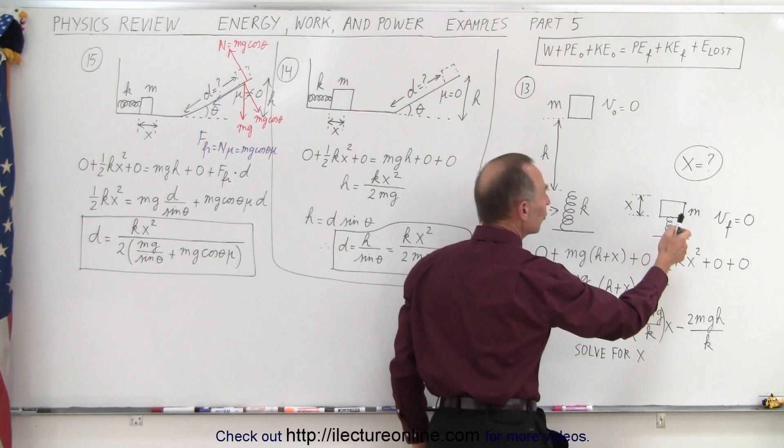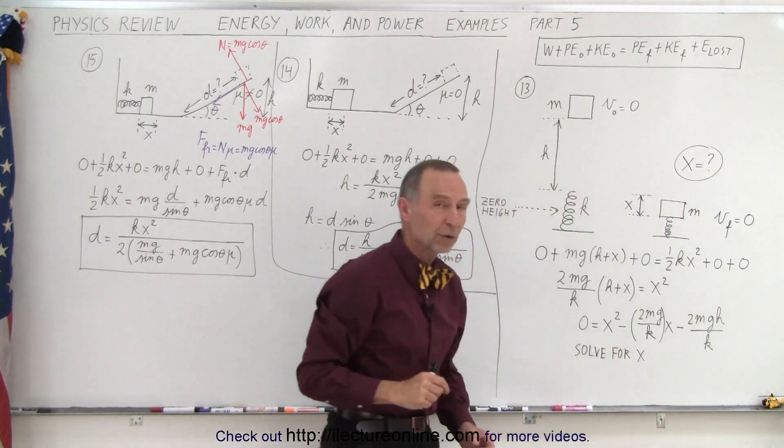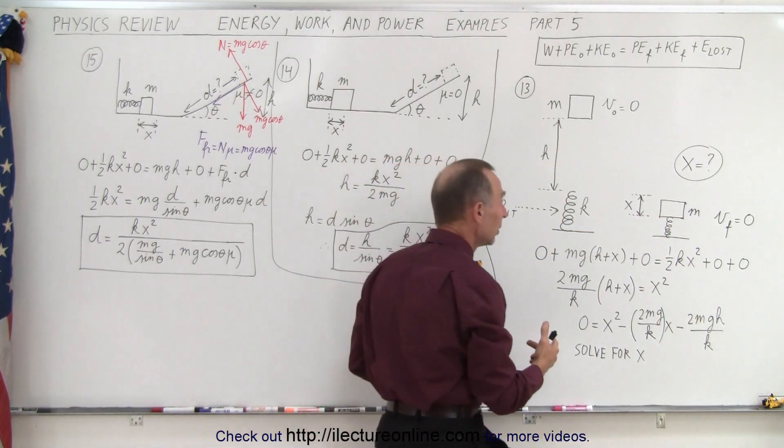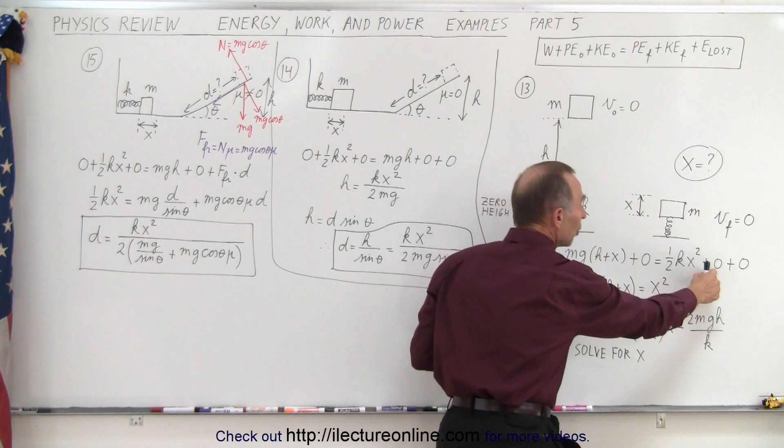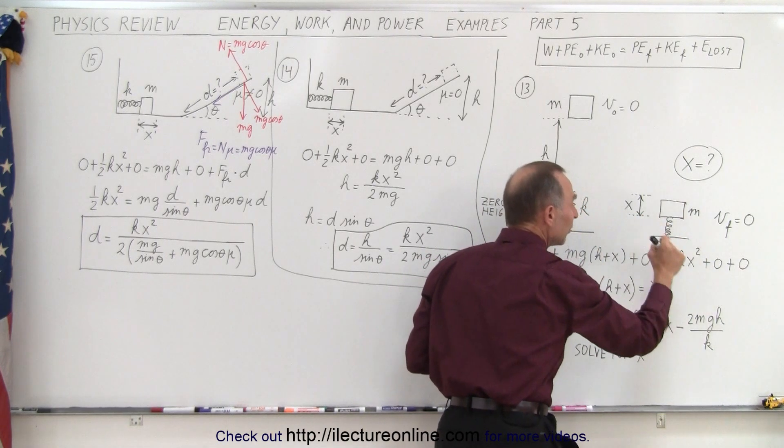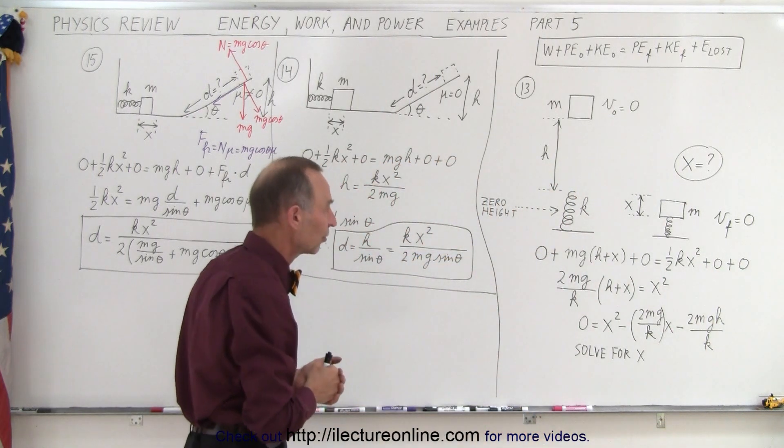At the very end, there is potential energy, but it's the energy stored in the spring, which is (1/2)kx². There's no height because we're now at the zero height. There's no kinetic energy because it's not moving, and no energy loss because we assume no friction, no wind resistance, or anything like that.